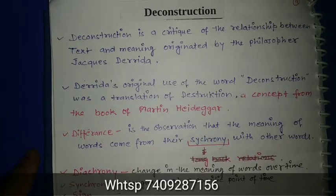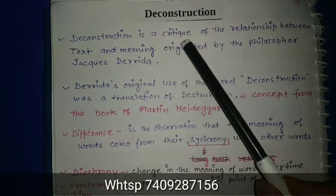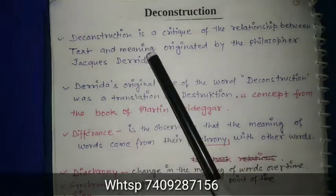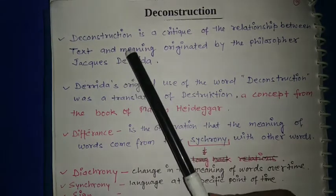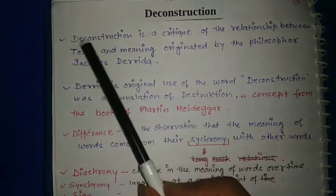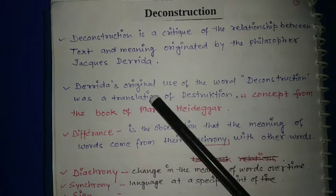Deconstruction is a critique of the relationship between text and meaning, originated by the philosopher Jacques Derrida. This is part of the modern age. Before modern age, earlier people did not consider text as an important part of criticism.